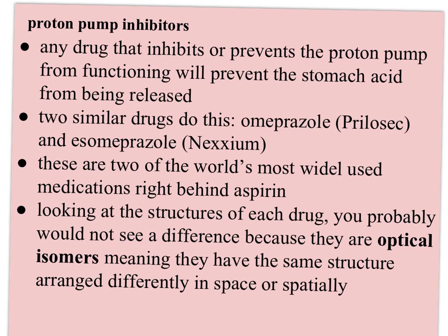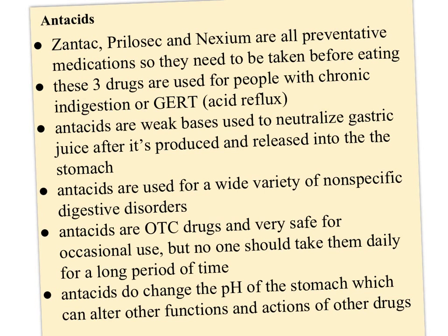The proton pump inhibitors are a little newer. These drugs inhibit or prevent the proton pump from functioning, so they prevent the stomach acid from being released. The H2 receptor antagonists prevent the signal from going out to make the HCl, whereas proton pump inhibitors prevent it from releasing. Two similar drugs do this: Prilosec (omeprazole) was developed first, and Nexium is a slight tweak on that molecule, marketed as a separate drug. They are two of the world's most widely used medications, right behind aspirin. Looking at the structure of each drug, you would not probably see a difference, because they're optical isomers — they have the exact same structure but it's arranged slightly differently in space. Zantac, Prilosec, and Nexium are all preventative medications that need to be taken before eating to work, and they're typically used for people with chronic indigestion or GERD.